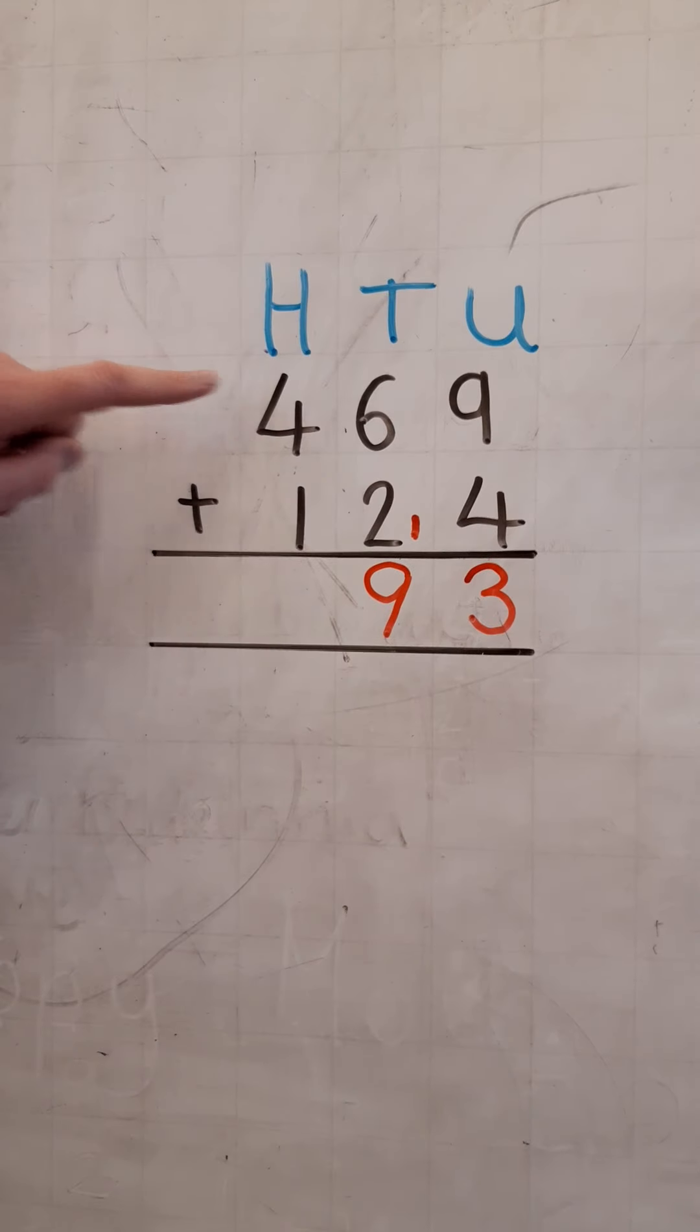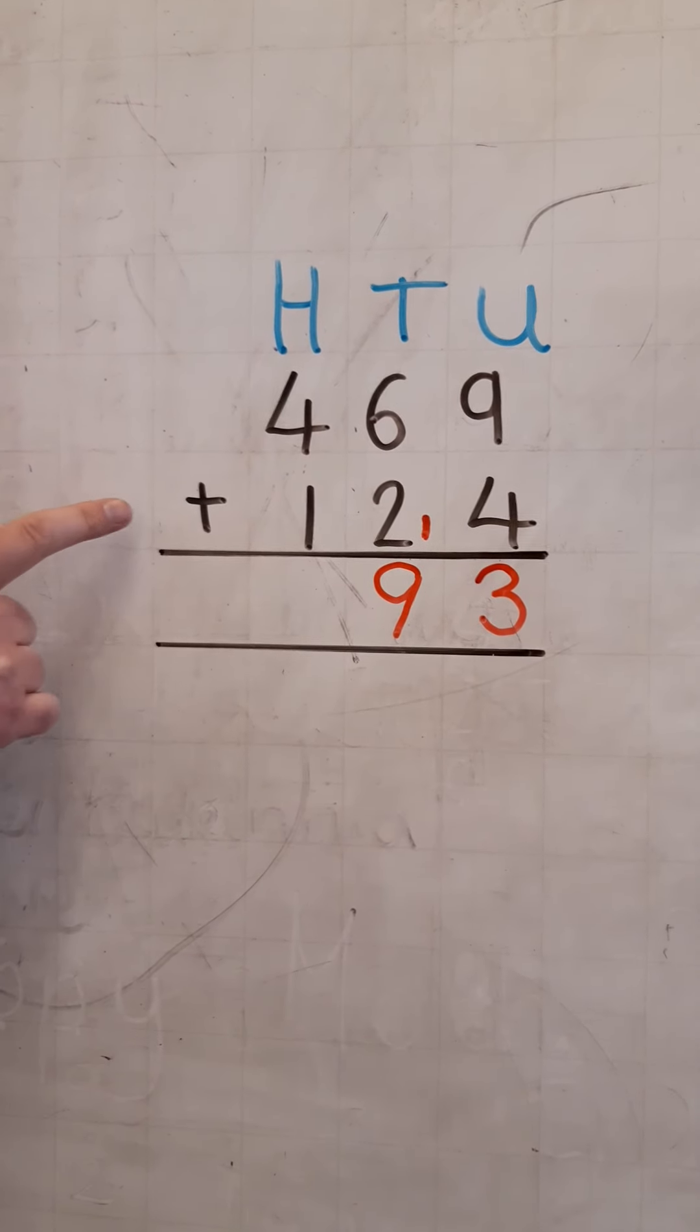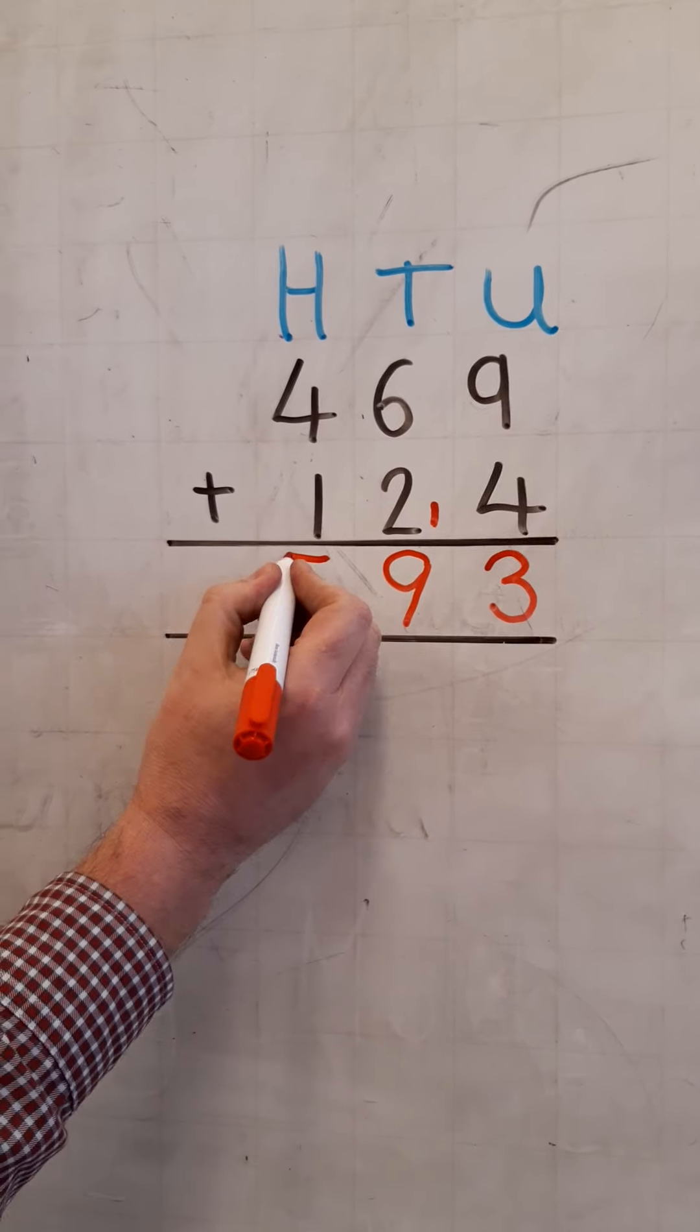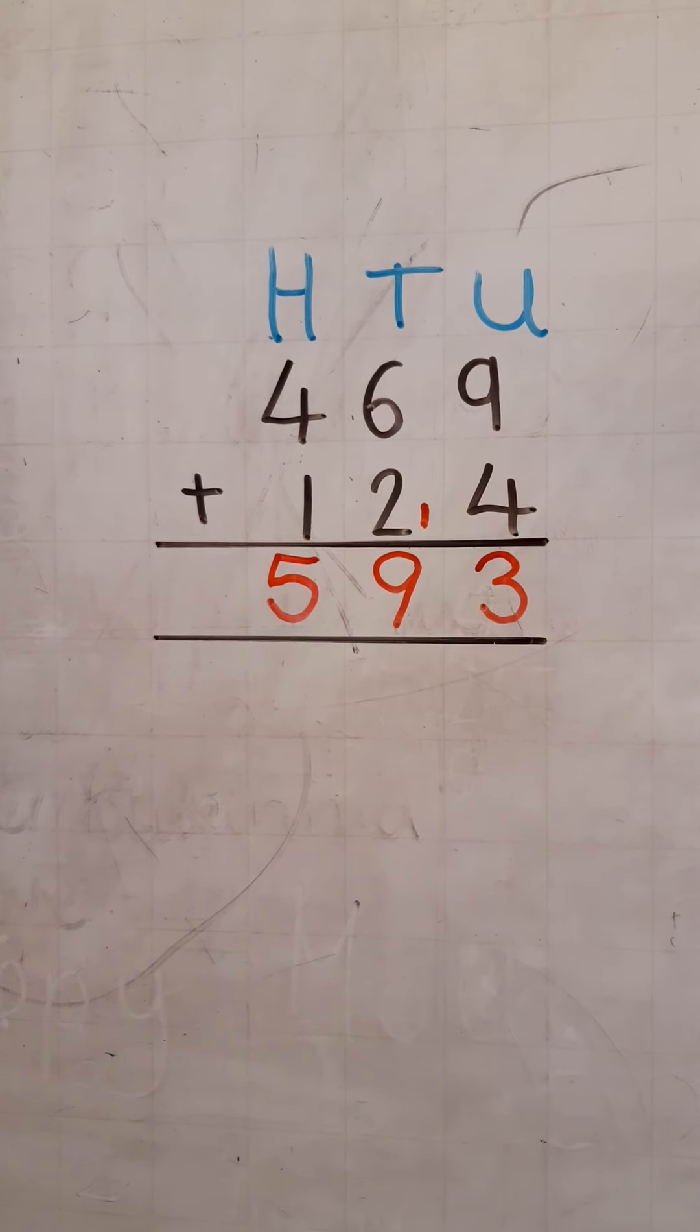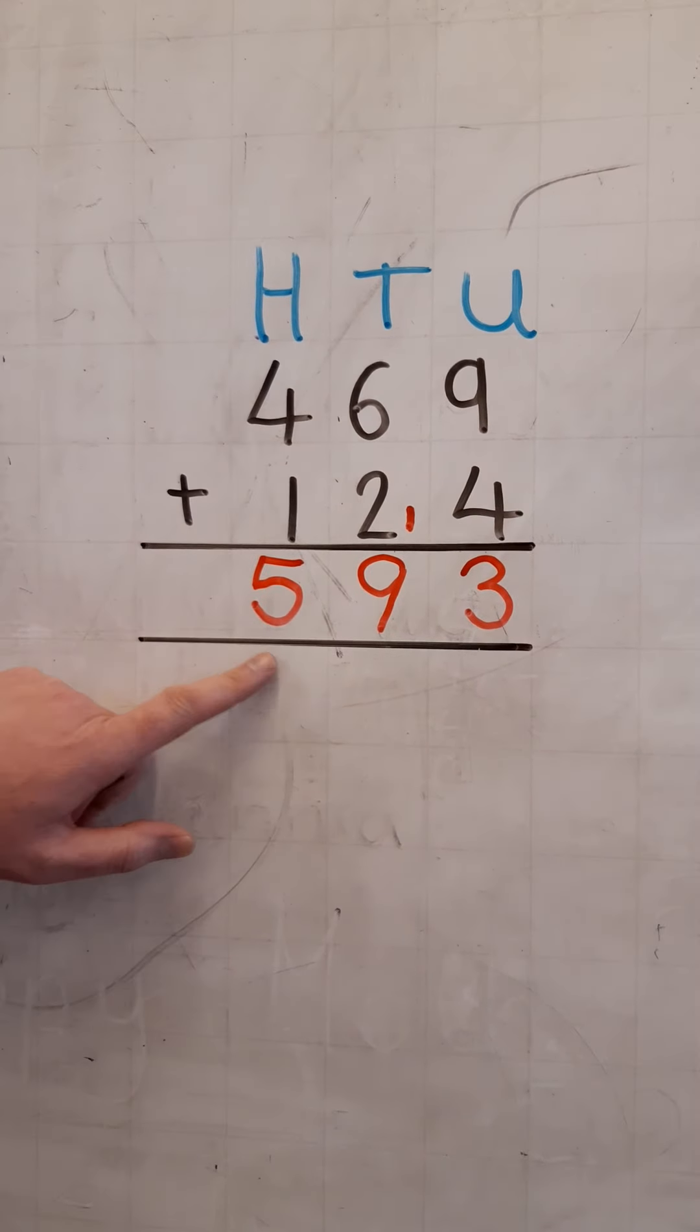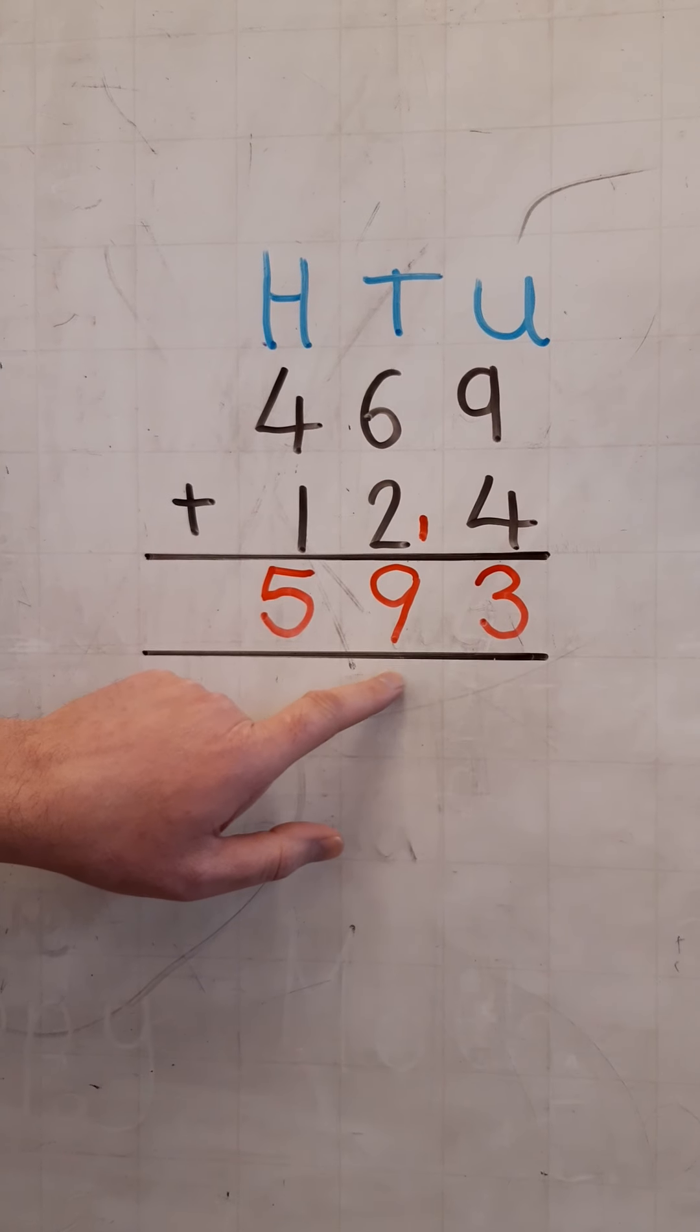And finally, adding the hundreds, four hundred add one hundred gives us a total of five hundreds, and a total of five hundred and ninety-three. Bye-bye.